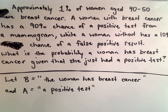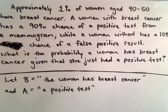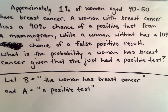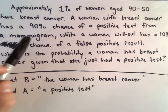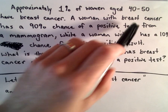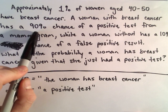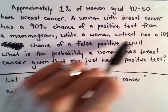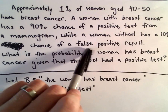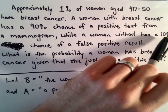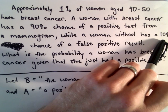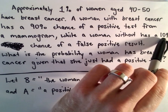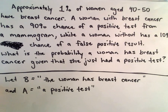Approximately 1% of women age 40 to 50 have breast cancer. One way to test for breast cancer is to have a mammogram. If we knew in advance that the woman already had breast cancer, there's a 90% chance of a positive test from the mammogram. A woman who doesn't have cancer has a 10% chance of a false positive result. These don't have to add up to 100% — they're independent rates.